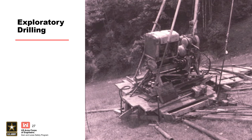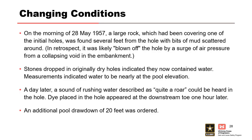Drilling to locate the source of the seepage proceeded during the next two weeks. Holes were augured in the embankment with no sign of seepage or voids, then core drilled along the downstream right abutment contact. Drill water was lost in all three abutment holes; however, dye added to the holes did not appear in the seepage at the downstream toe. While drilling focused on the abutment, a large rock covering one of the borings was blown off by the air surge from a collapsing void in the embankment. Borings that were initially dry now had water equal to pool, rushing water was audible in one boring described as quite a roar, and dye placed in the boring appeared at the downstream toe in one hour.